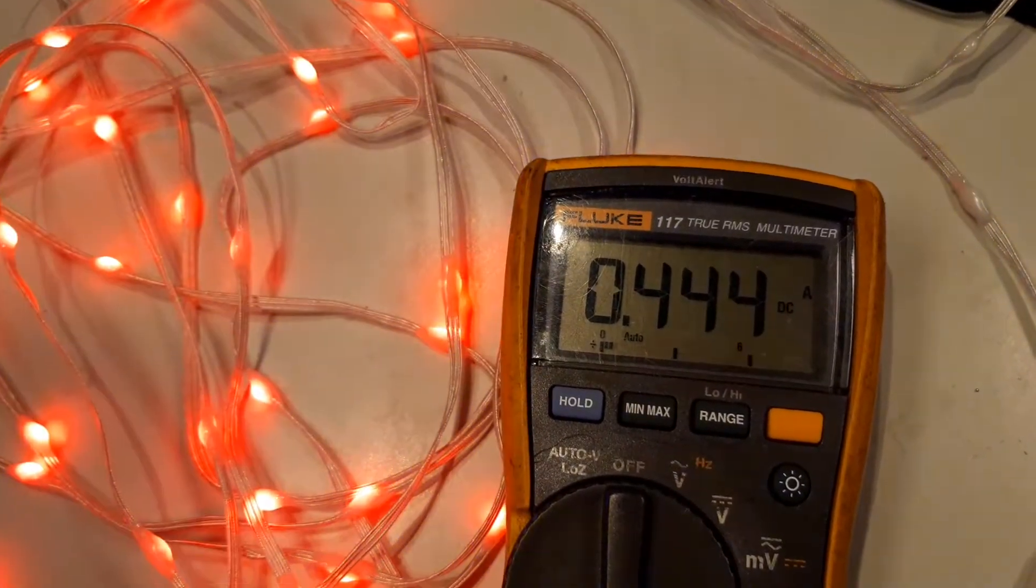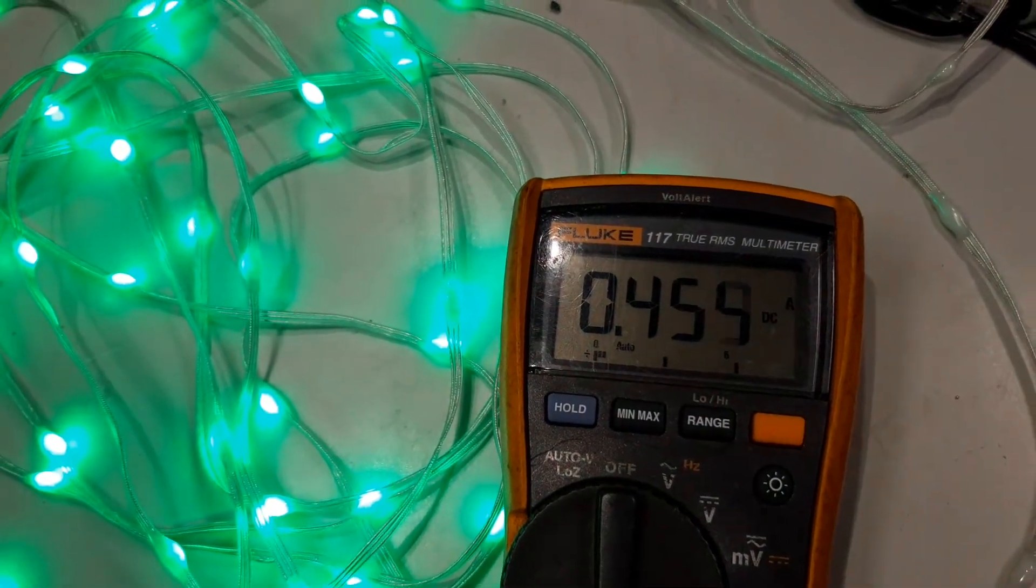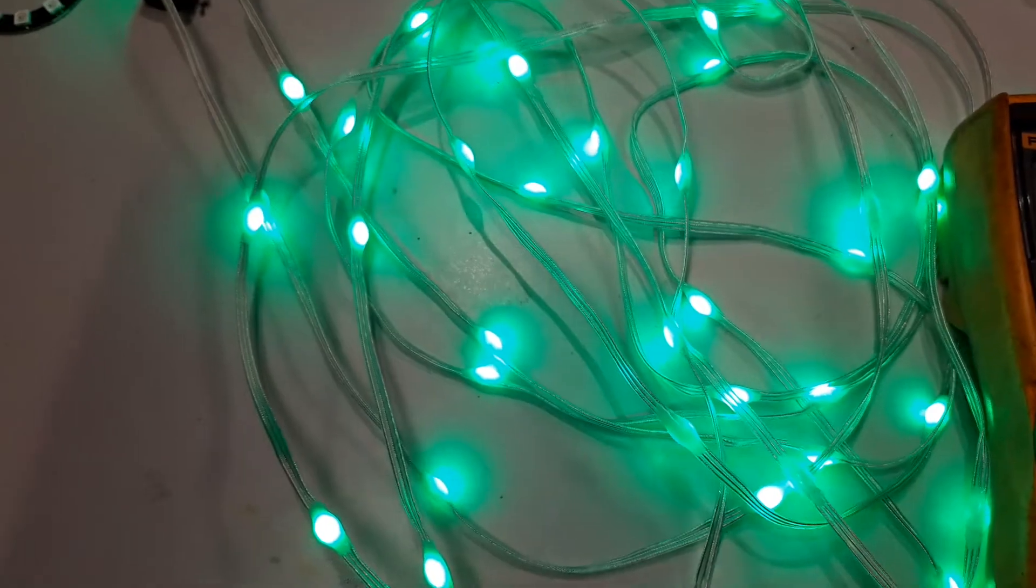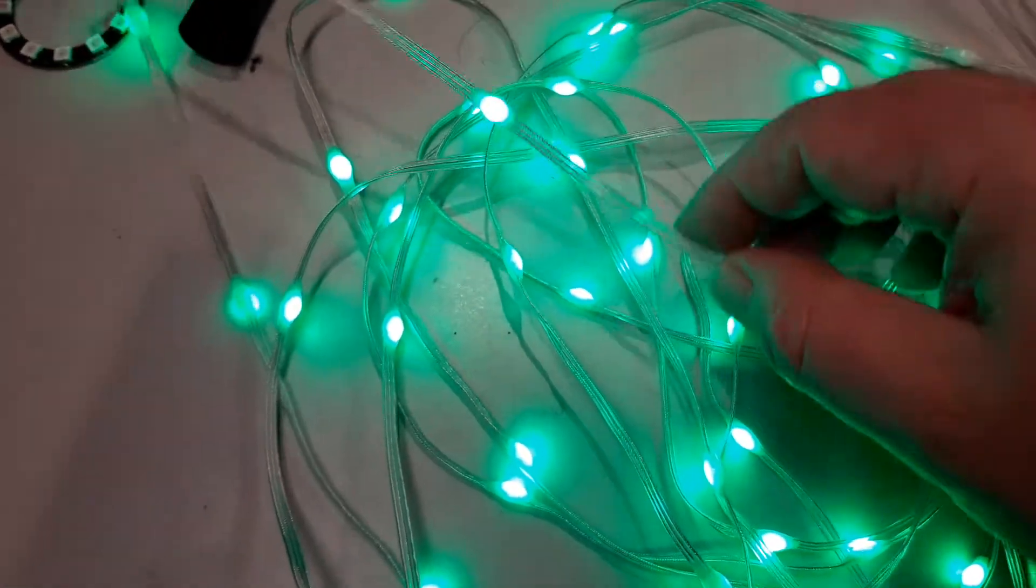That's just a single color, so single color drops to about 450 to 500 milliamps roughly depending on the color. About 450 milliamps there. So it's not three times the current when it's on white. That's probably just due to losses in the cabling there.